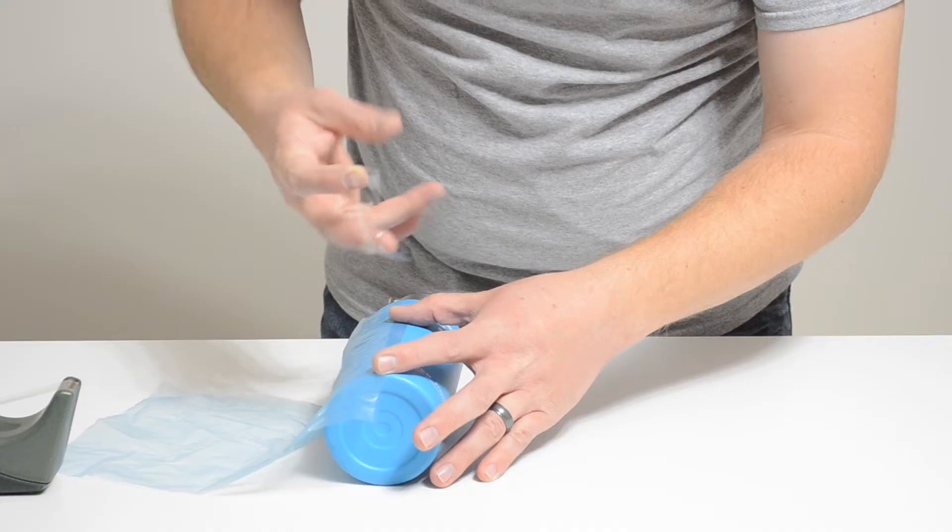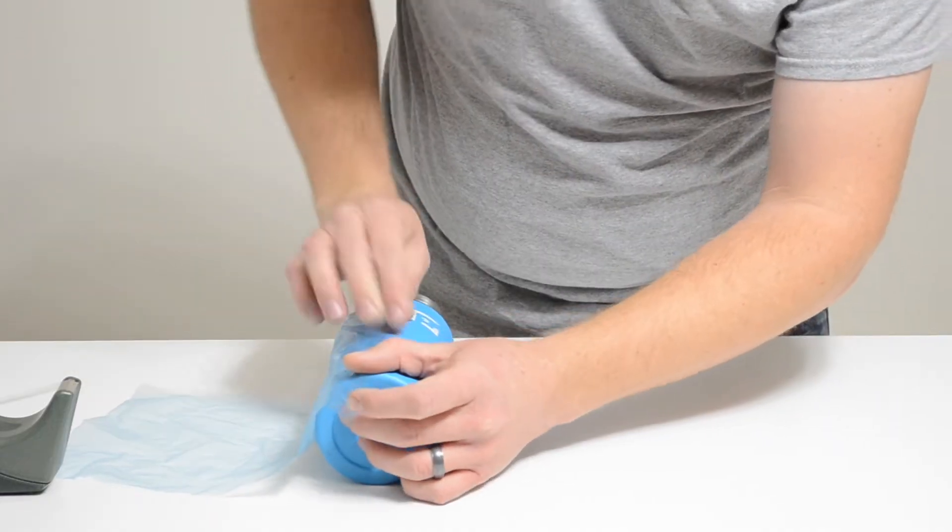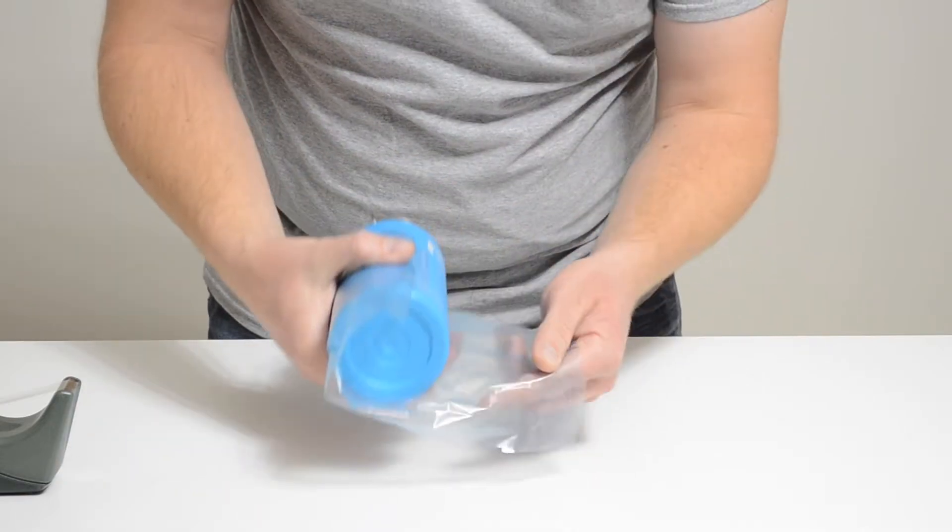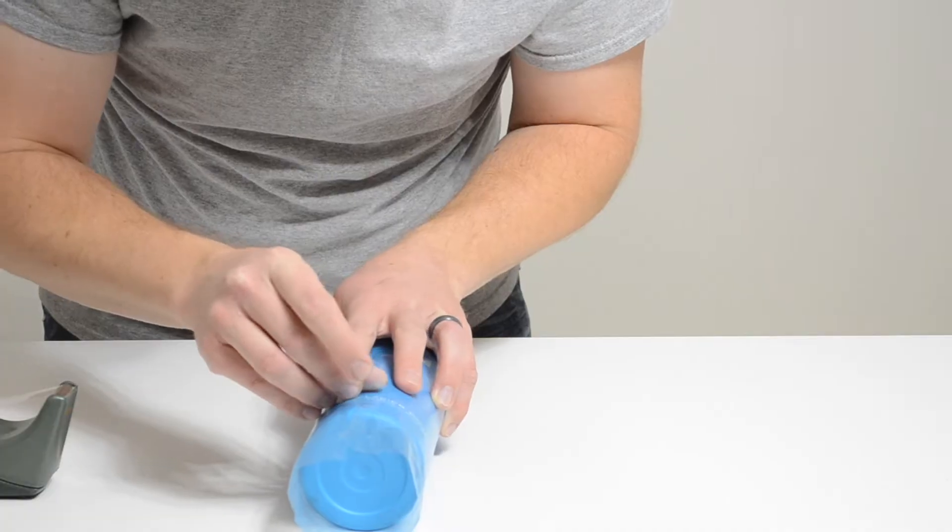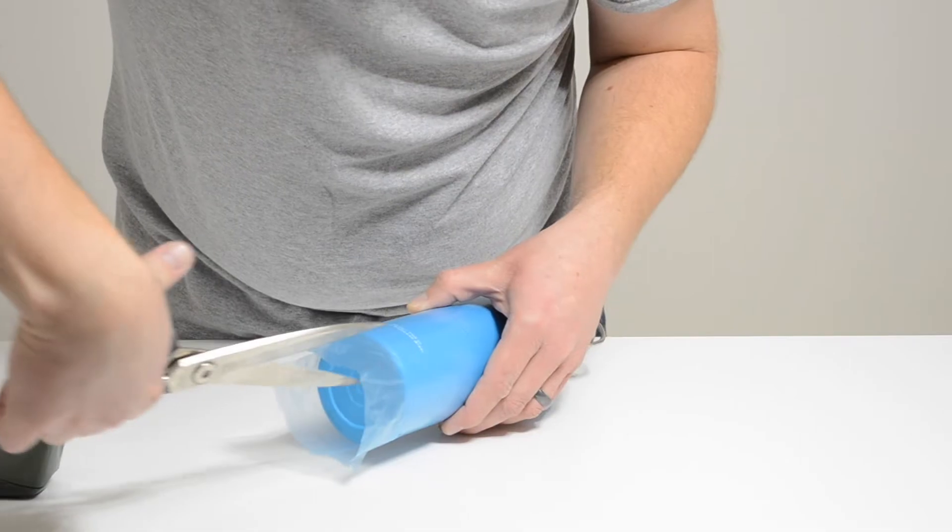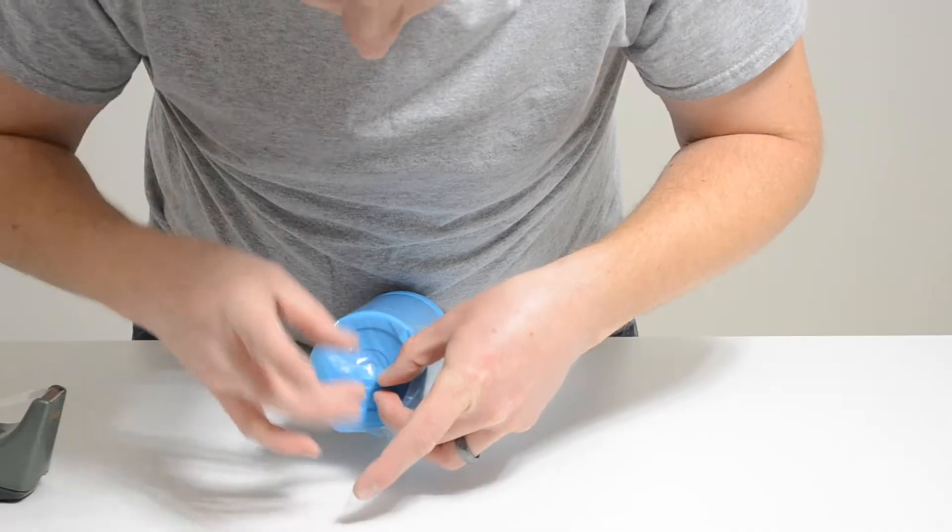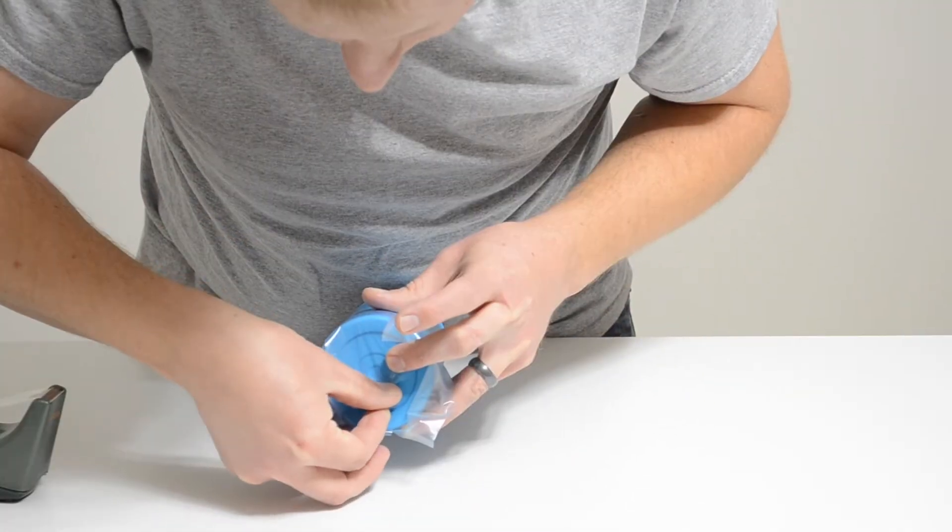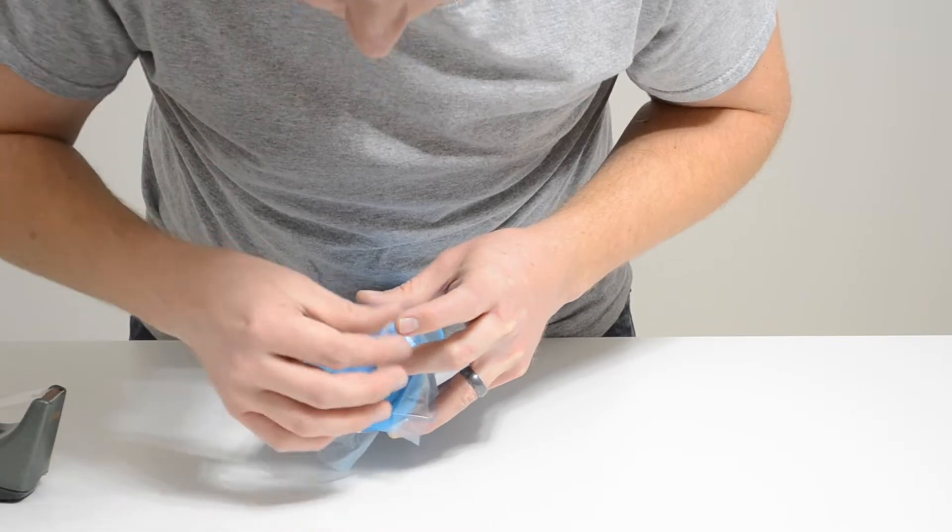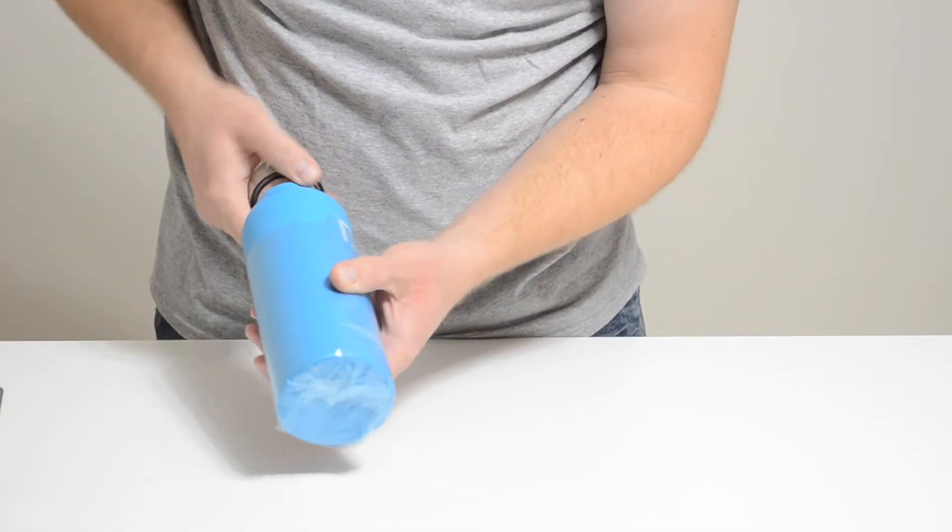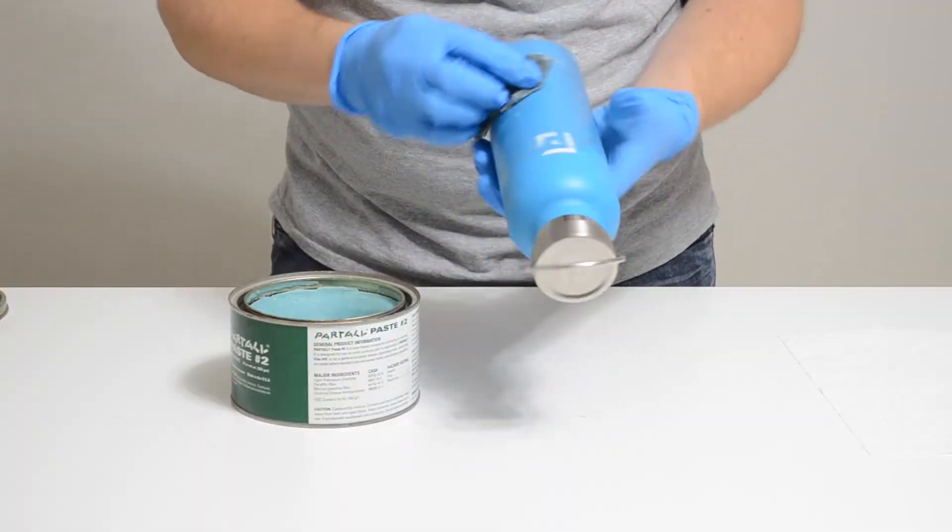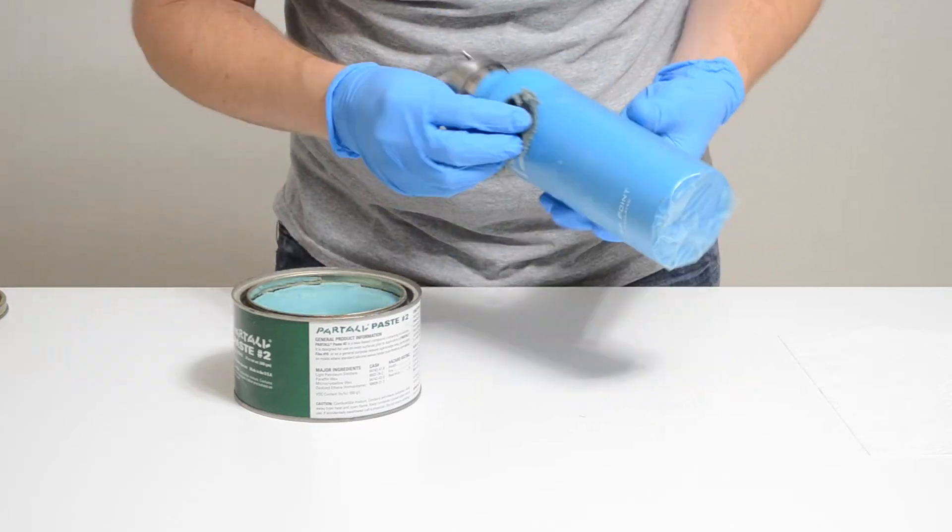I started by sticking the vacuum bagging film to the bottle using clear cellophane tape. Making slits around the bottom allowed me to wrap the bottom around without having too many wrinkles and made for a much nicer finish. I then applied two layers of wax, carefully buffing in between each layer.